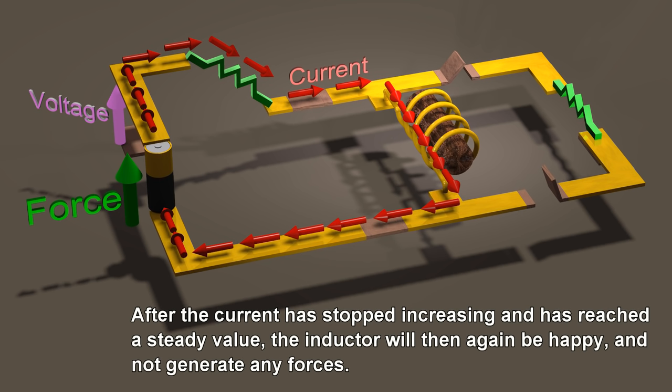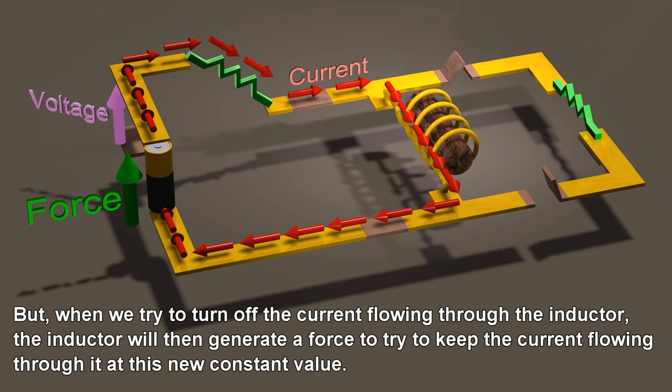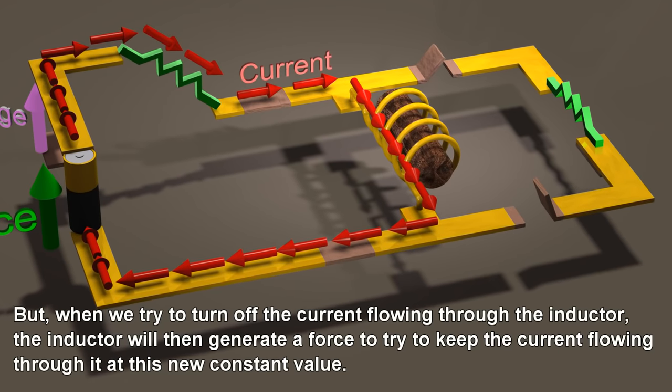After the current has stopped increasing and has reached a steady value, the inductor will then again be happy and not generate any forces. But, when we try to turn off the current flowing through the inductor, the inductor will then generate a force to try to keep the current flowing through it at this new constant value.